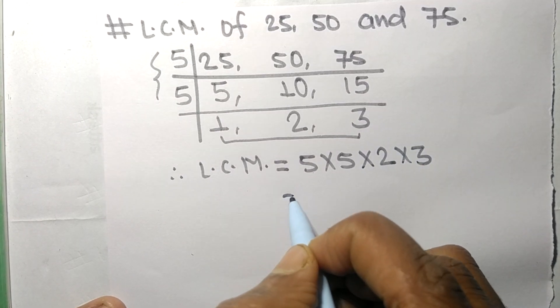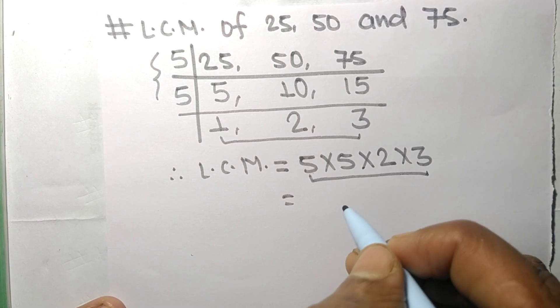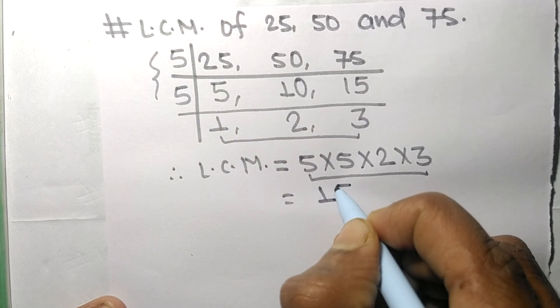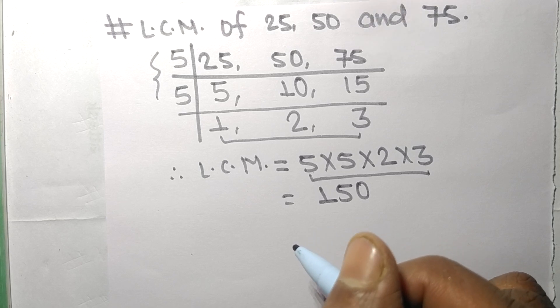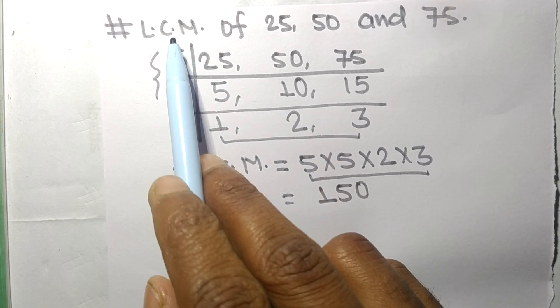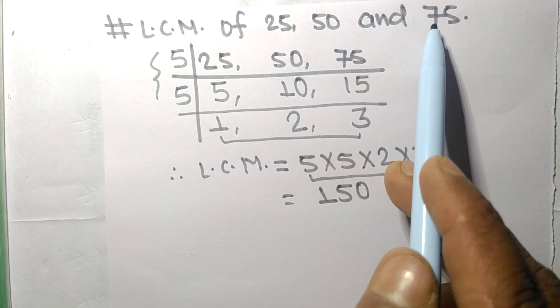By multiplying all these numbers we get 150. So 150 is the LCM of 25, 50, and 75.